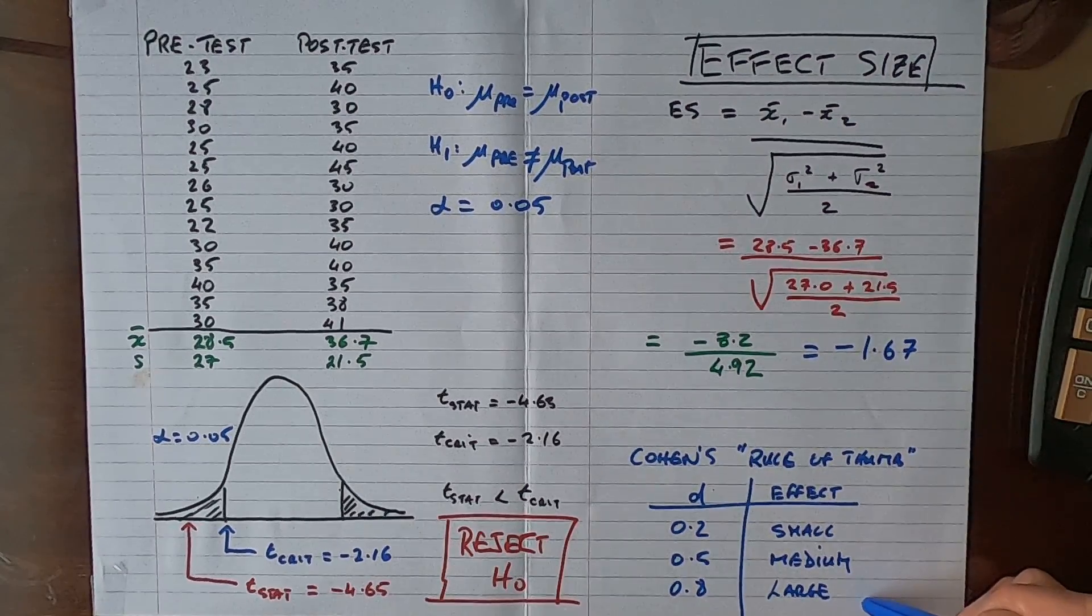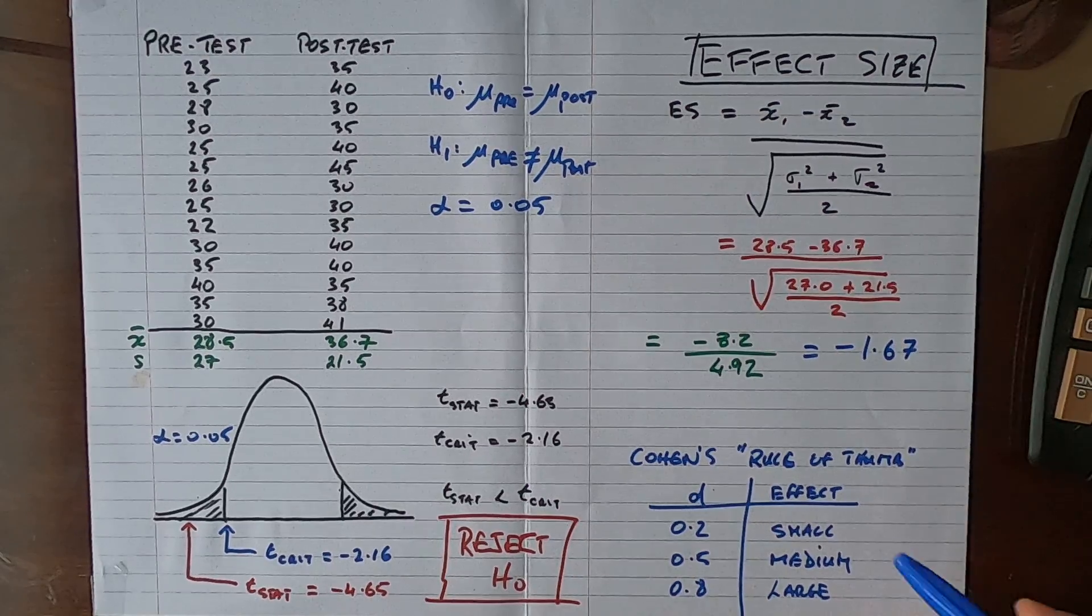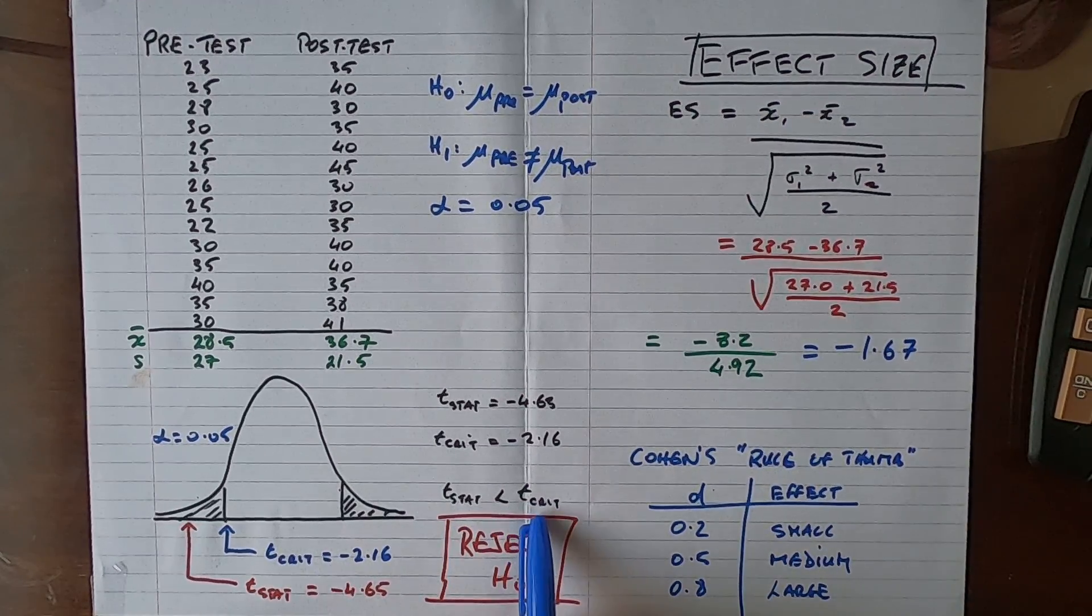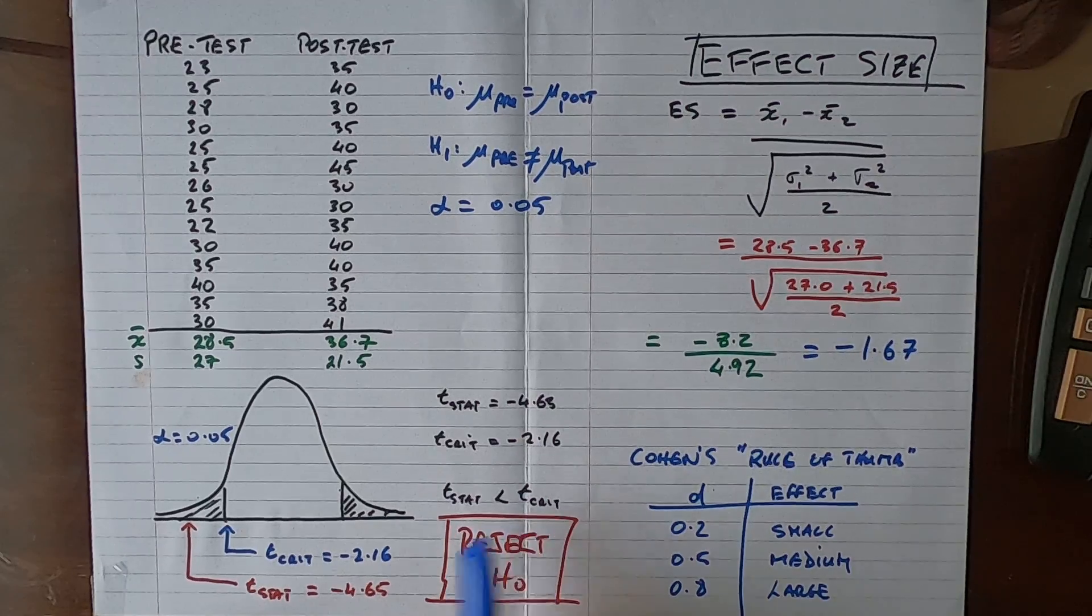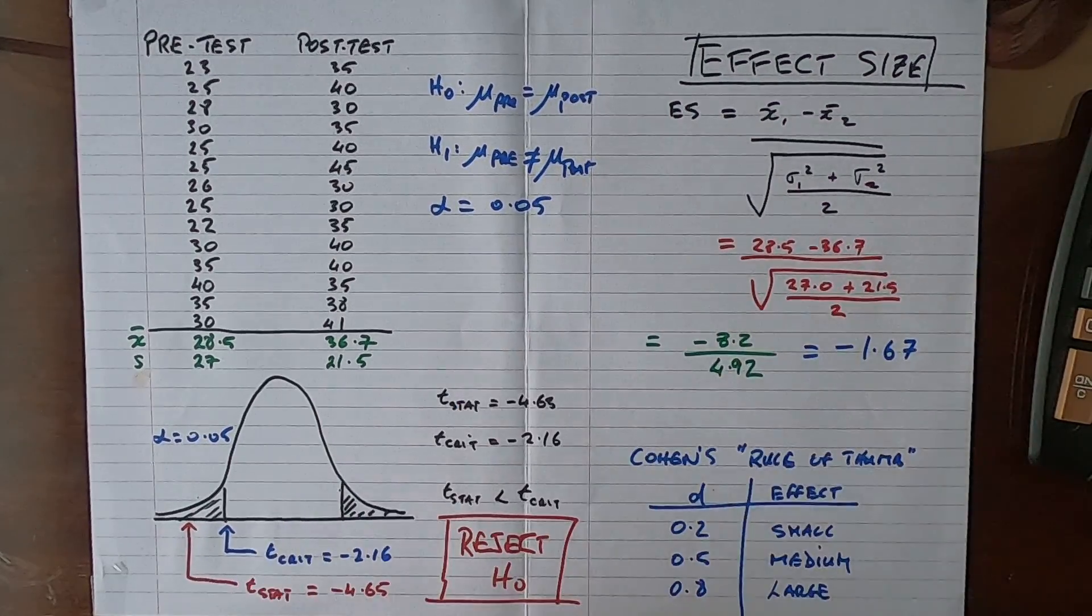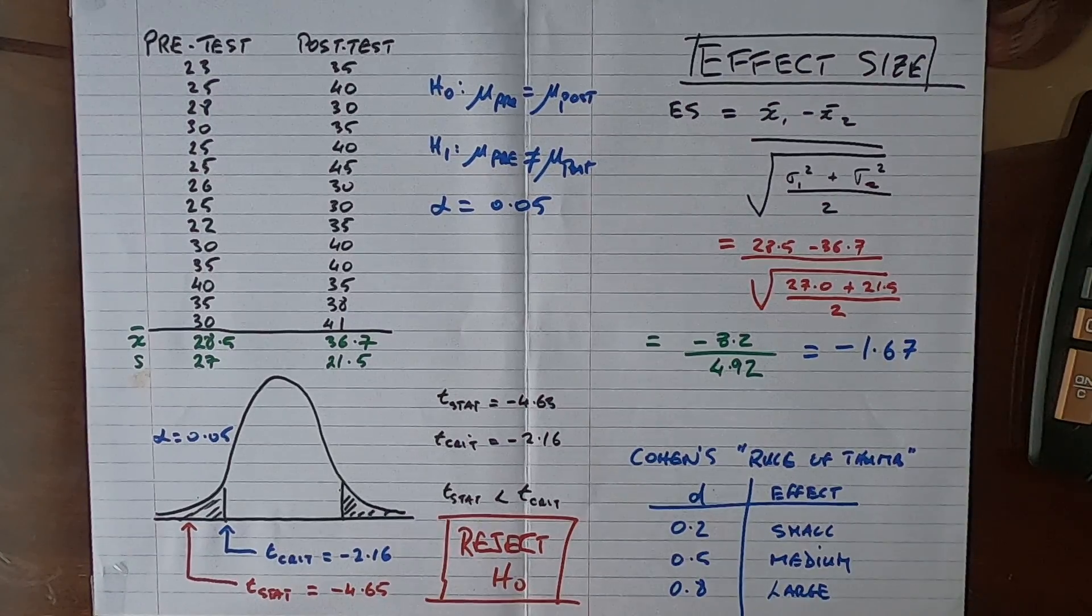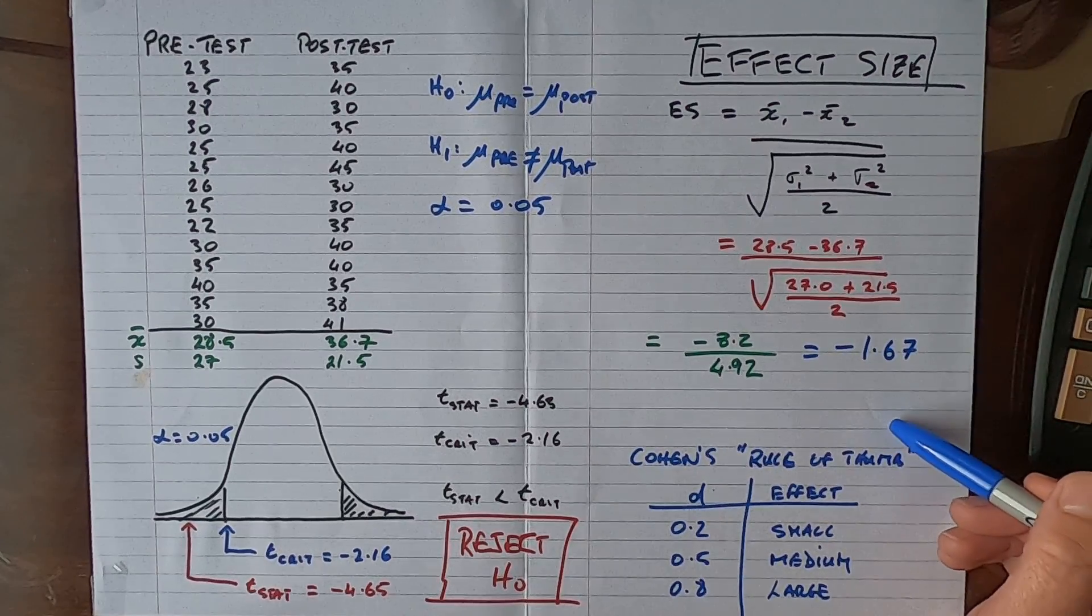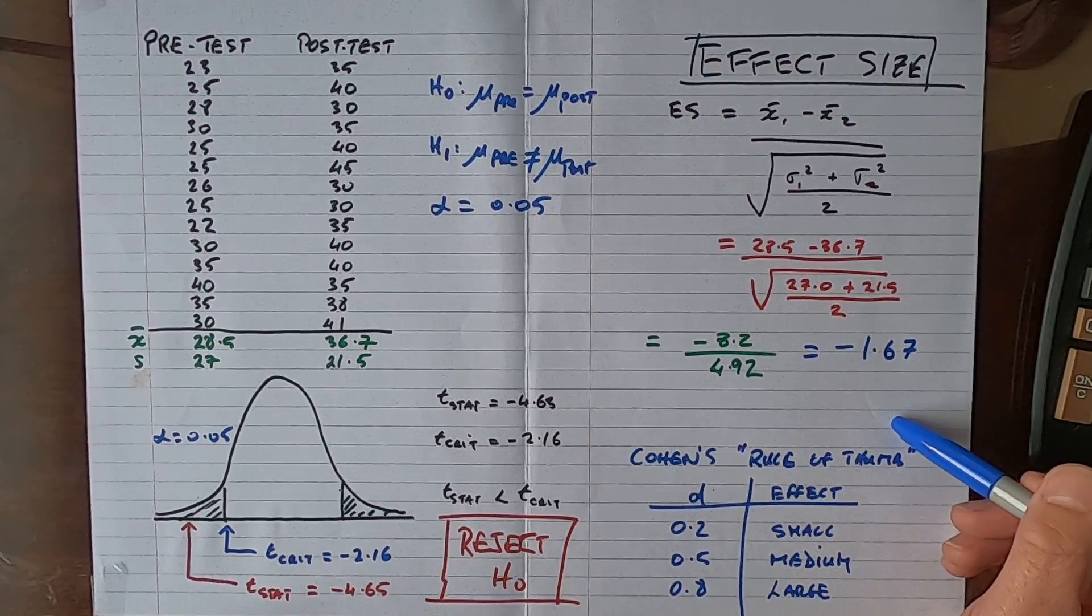So after rejecting the null hypothesis because of our test statistic being less than our critical value here in the left tail, our p-value would also be less than our alpha value of 0.05 in this instance. We have found that there's an effect, and in this case here we can say that it is a very, very big effect.